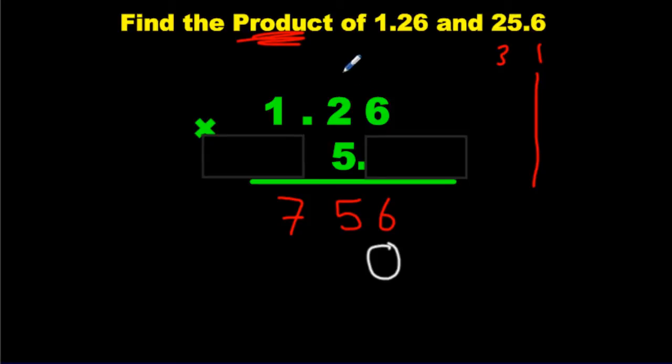Now we can begin. Five times six is 30. Carry the three over the next number. Put the zero down. Five times two plus three is 13. Right away, carry the one. Put the three down. Five times one plus one is six. Any decimals yet? No. Worry about the decimals at the end.